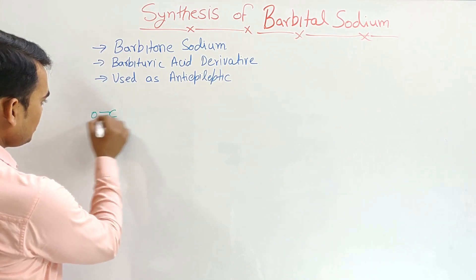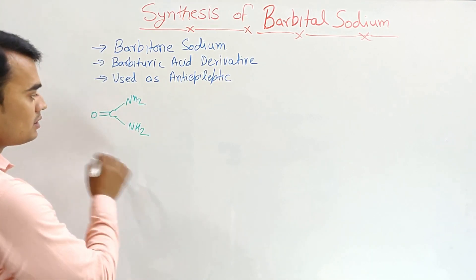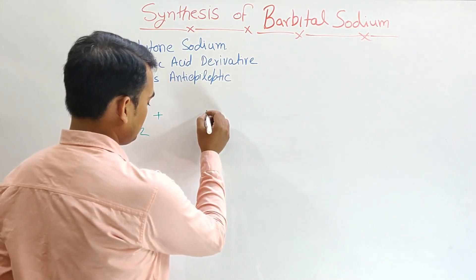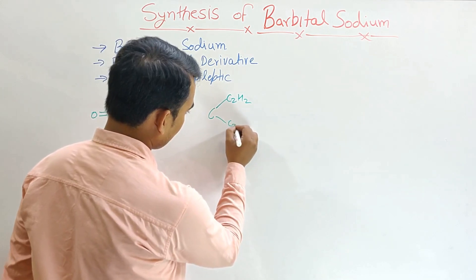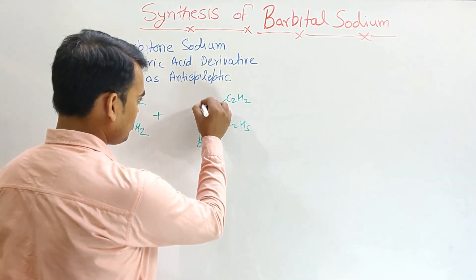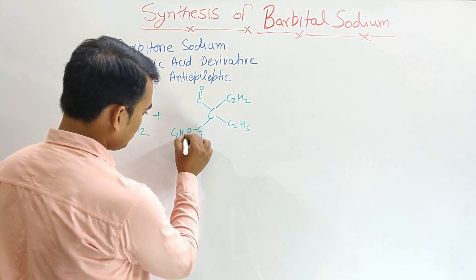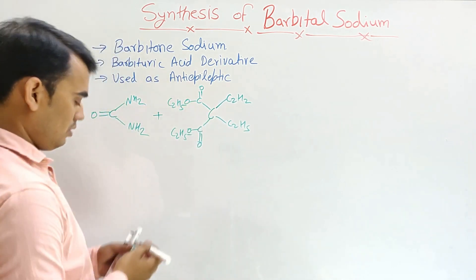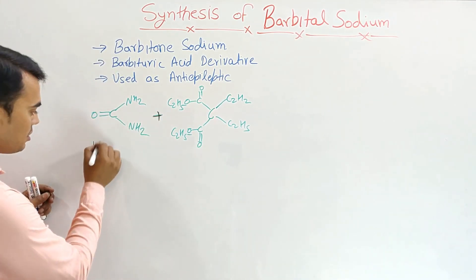Here, CO(NH2)2. This is the urea. When it reacted with diethyl. When this reaction is carried out, and the name of this compound is, this is urea.